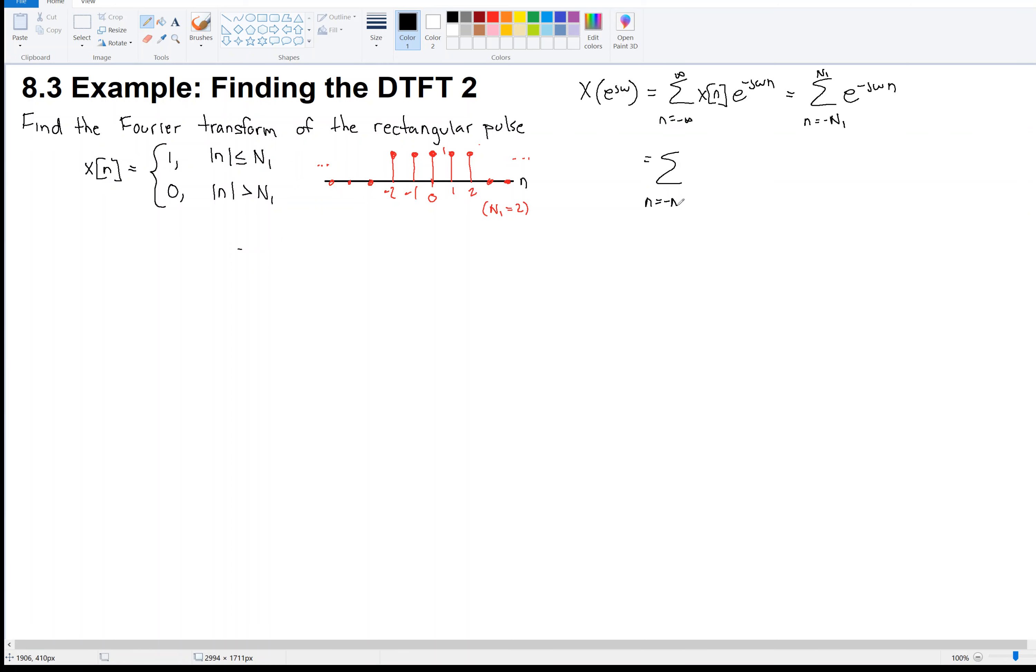So what I'm going to do is I'm going to break this into two sums. So I'm going to go from negative n1 to negative 1 of e to the minus j omega n. And then I'm going to add to that, then the other piece, n equals 0 to n1 of e to the minus j omega n. Now, I'll write out the finite sum formula over here in blue, just to remind ourselves. The finite sum formula says that the sum from n equals 0 to N of alpha to the n is equal to 1 minus alpha to the N plus 1 over 1 minus alpha.